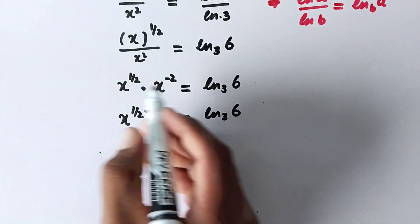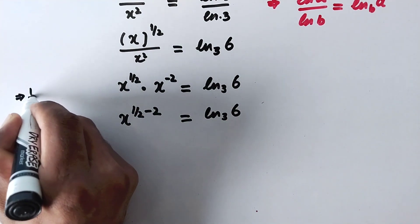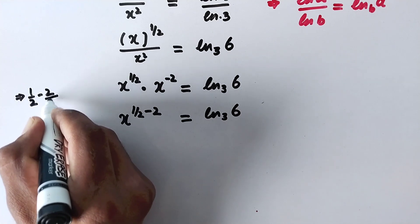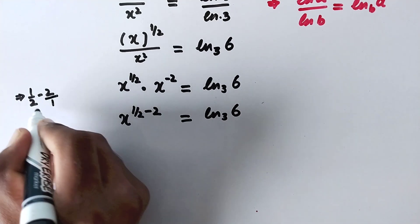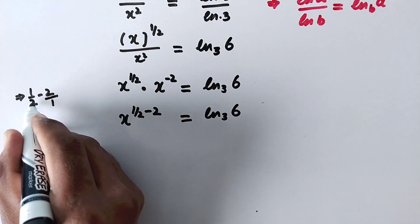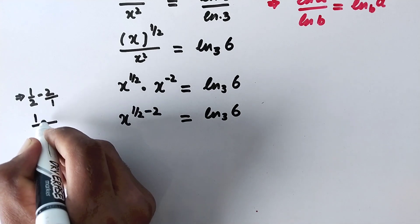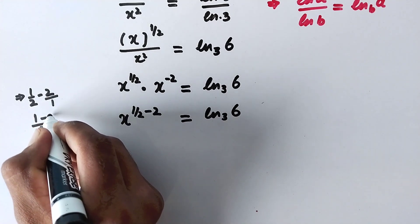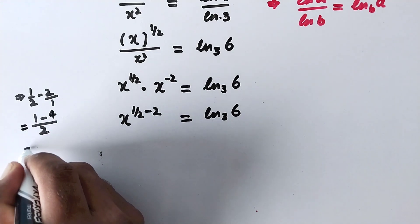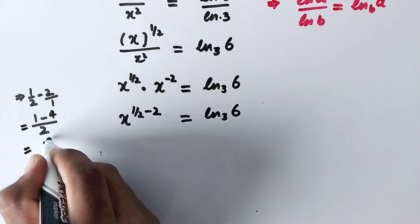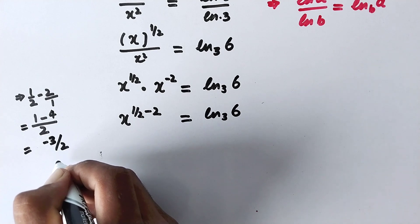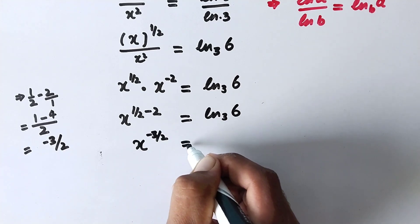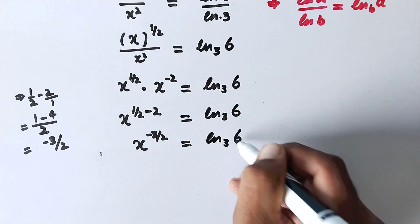Now we solve the exponent 1 over 2 minus 2. Writing 2 with denominator 1, the least common multiple is 2. So: 2 divided by 2 is 1, and 1 times 1 is 1; then 2 divided by 1 is 2, and 2 times 2 is 4. Therefore 1 minus 4 equals minus 3, giving minus 3 over 2. So x to the power of minus 3 over 2 is equal to ln base 3 of 6.